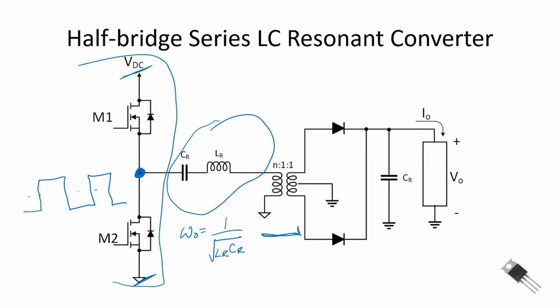The transformer has a turns ratio of N to one to one. It's center tapped. And with N greater than one we will buck the system and create a lower output voltage, and with N less than one we can boost the system. Here we show a full bridge rectifier with our center tap transformer. Finally, we have a filter capacitor and an output load.